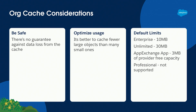What are some considerations for using the cache? One is to be safe. There's no guarantee against data loss from the cache — it's not a permanent storage solution. Don't put data in the cache and assume it will always be there. Caches expire, that data isn't permanent. You need a persistent storage solution for where you're actually storing your data.